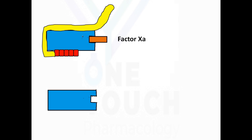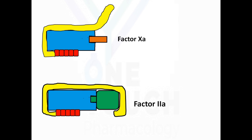To inhibit factor Xa, antithrombin III only needs a conformational change of the active site. However, to inhibit factor IIa (thrombin), antithrombin not only needs a conformational change, but heparin has to bridge over both antithrombin and factor IIa together. That's why only unfractionated long molecules of heparin can inhibit factor IIa, whereas smaller low molecular weight heparin can only inhibit factor Xa, because low molecular weight heparin cannot bridge antithrombin and factor IIa together.